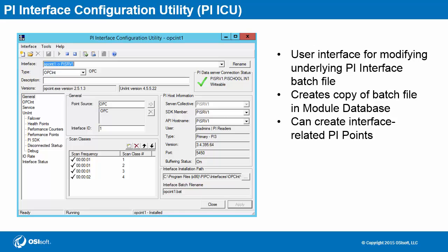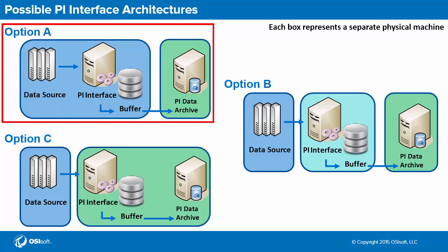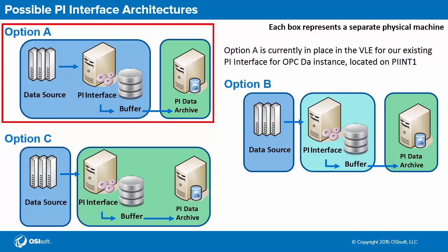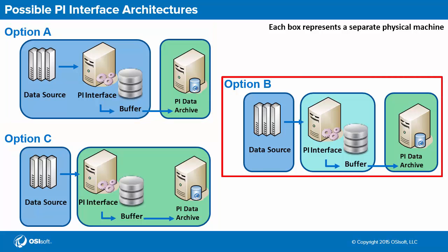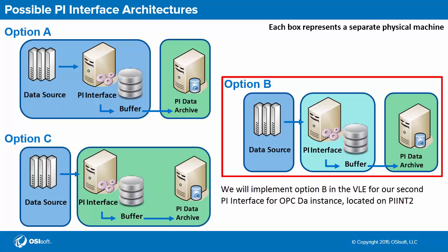Before we start installing, let's look at a few PI interface installation considerations, specifically where to install it. This first architecture shows the PI interface and buffering installed on the same machine as the data source. In terms of connections and security between the data source and the interface, this is the simplest route as everything is on one computer. However, depending on the data source, this may not always be possible, especially when the data source is in a sensitive network or on a high-priority computer. That is what step B shows: the PI interface and buffering are on their own machine, separate from the data source and the PI data archive. We'll adopt this structure when installing on the PI interface server.